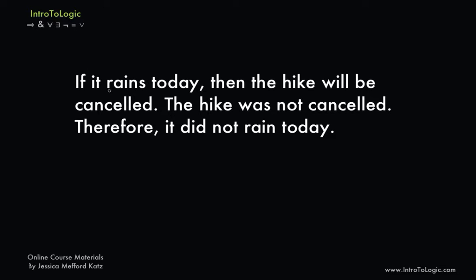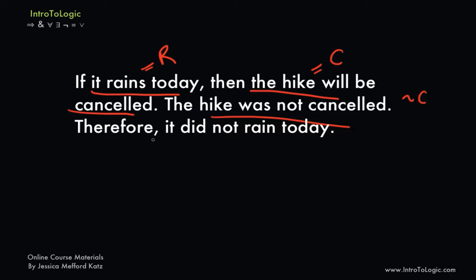The first thing we need to do when translating any argument is find the assertions. Here we have 'it rains today', which I'll symbolize with the letter R. 'The hike will be cancelled' can be symbolized with the letter C. 'The hike was not cancelled' is just the negation of C, so that's 'not C'. And 'it did not rain today' is the negation of R, 'not R'.